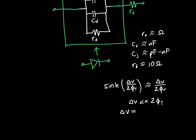And just to give you a sense of the magnitudes involved, when delta V is equal to half of a phi T, so that's about 13 millivolts, then our percent error, we have one percent error.